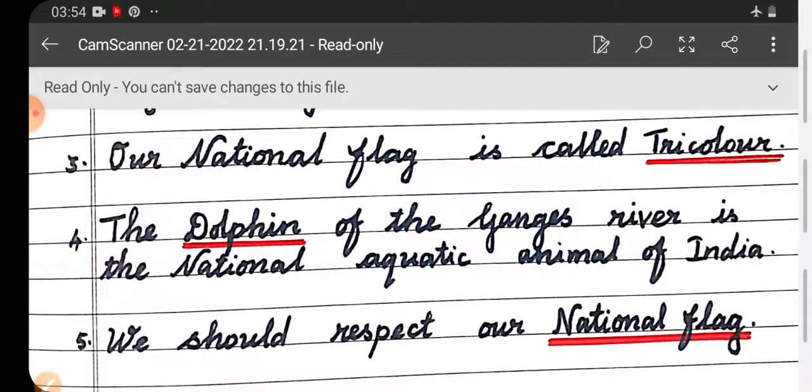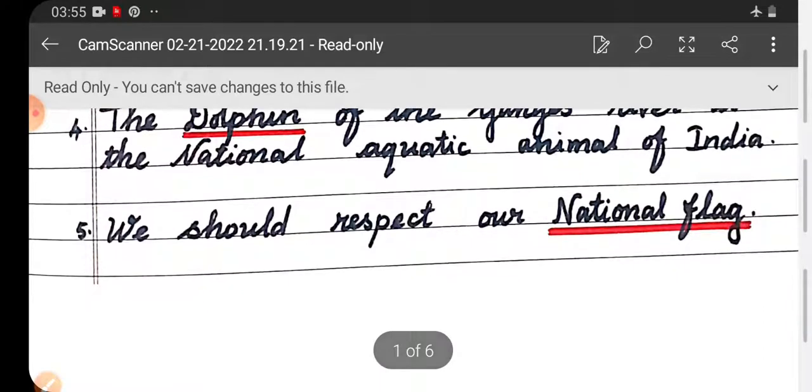Number four: The dolphin of the Ganges river is the national aquatic animal of India. Fifth one: We should respect our national flag.